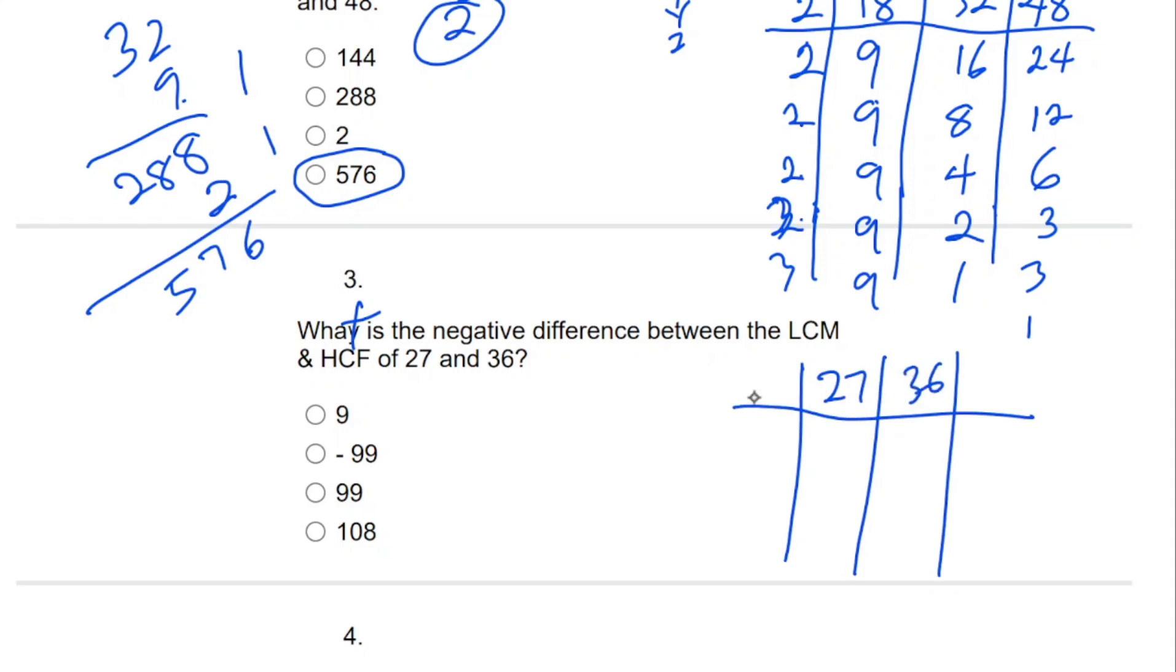We start with LCM first. The number that can go here is 3. 3 into 27 is 9, 3 into 36 is 12. 3 can still go: 3 and 4. So we can move ahead. The HCF is 9.